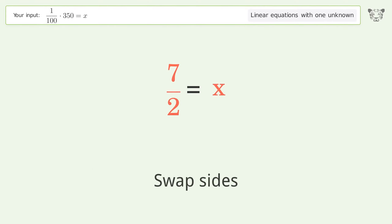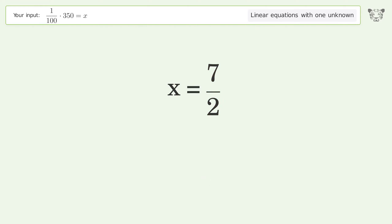Swap sides, and so the final result is x equals 7 over 2.